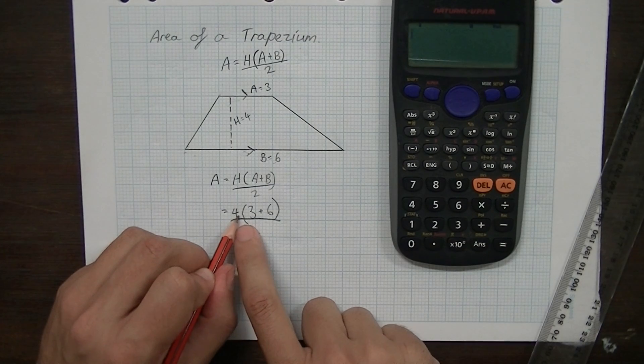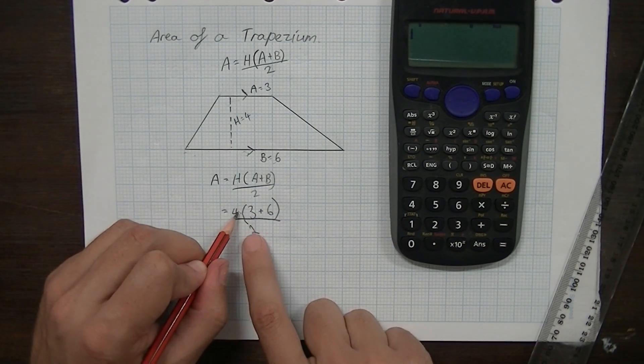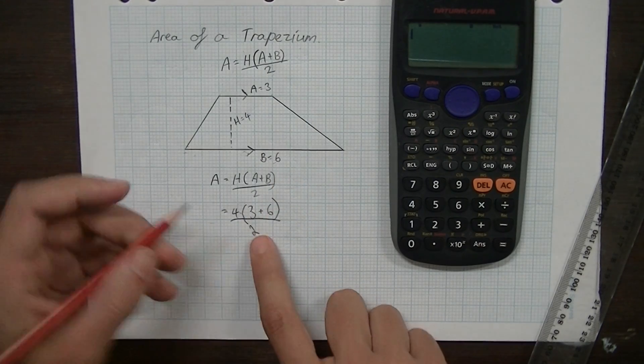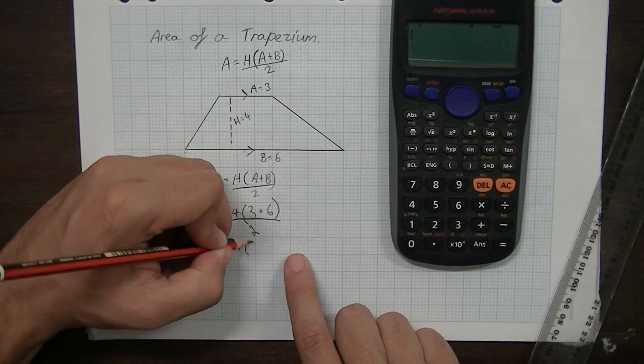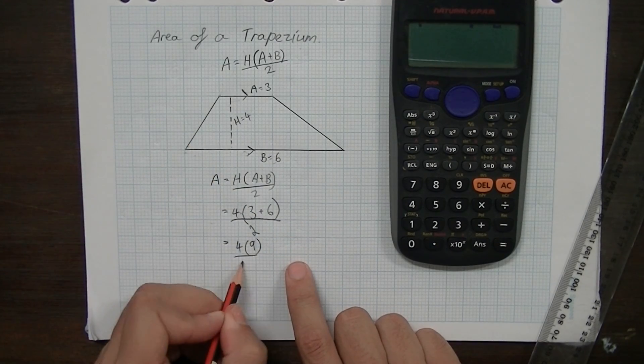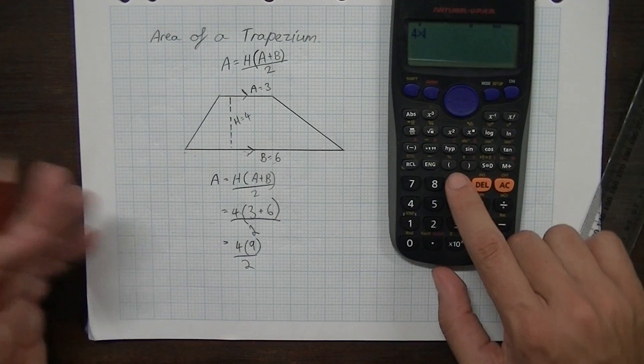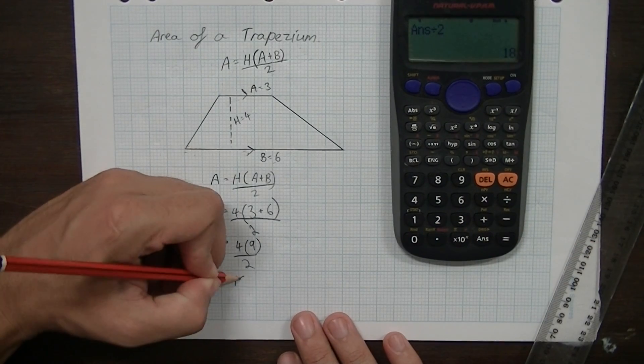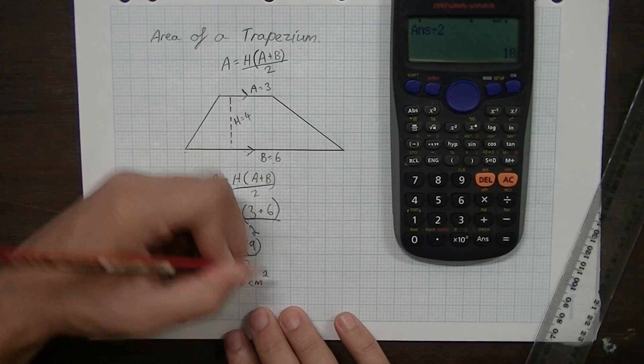Now, you'll notice that there's a 4, no space and then a bracket. That means that there's a multiply sign in there. So it's 4 times 3 plus 6 divided by 2. So that's going to be 4 times 3 plus 6 which is 9 and then that's divided by 2. You can type that into your calculator just like that with the brackets and everything.